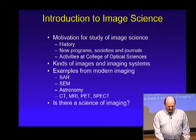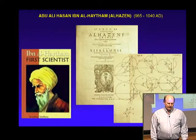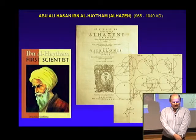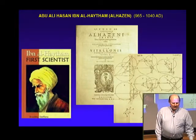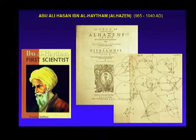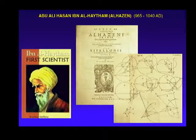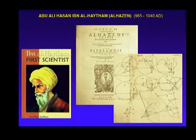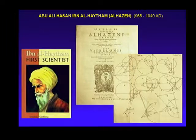Historians will always disagree about who originated things — someone can always find somebody who did something earlier. I'm just going to pick an arbitrary point, and it goes back a long way. It came out of Egypt: a scientist named Abu Ali Hassan ibn al-Haytham, whose Western name is Al-Hazan, is credited by many historians as really the first person who formulated a modern version of the scientific method.